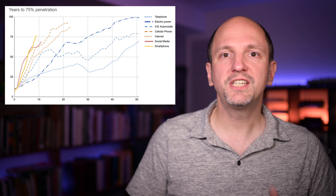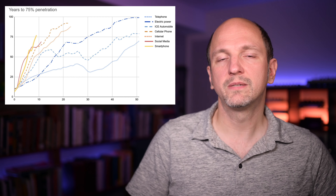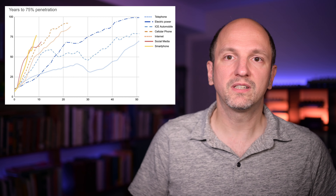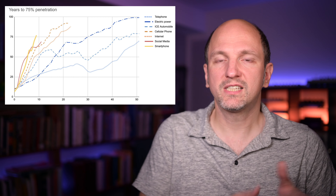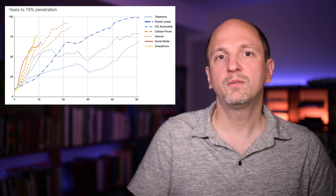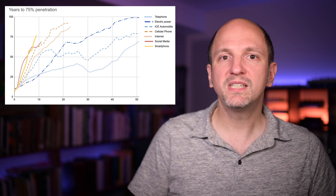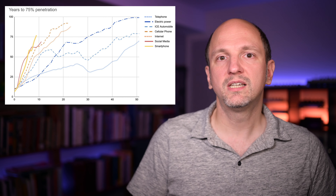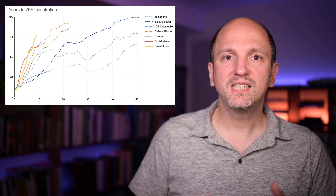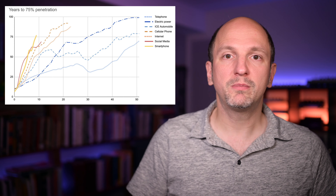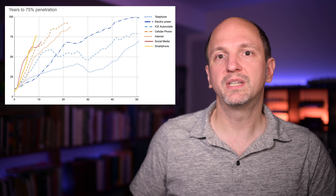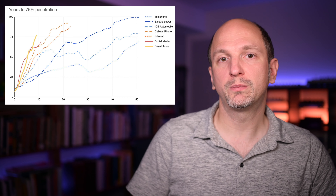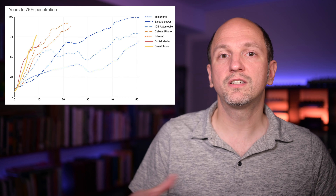A different example is this chart showing market penetration for different technologies, from electricity and the telephone to social media and smartphones. They were introduced at very different times, so the key is to align them at some point for reference — I think this was done when they had crossed 10% of the market. This is basically an index on both axes as well, since the percentage on the vertical axis takes into account things like market size. These lines also overlap in absolute time, unlike the bear markets example. But this makes it possible to get a sense of the speed at which different technologies made their way into people's lives, even though this chart covers around 150 years.